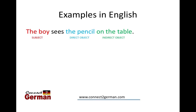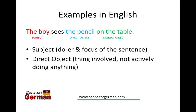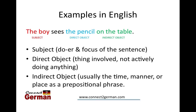To rehash what subject, direct object, and indirect object mean: the subject is the doer or the focus of the sentence - clearly it's the boy seeing the pencil. The pencil is the direct object; it's the thing that's involved but not really doing anything. It happens to be seen by the boy - it doesn't have a choice. The indirect object, 'on the table' here, usually describes time, manner, or place.